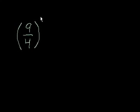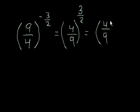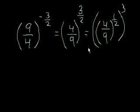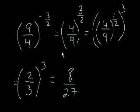Let's try 9 over 4 to the negative 3 over 2. We see that negative exponent, so we flip the base to get 4 over 9 to the 3 halves. We know that equals 4 over 9 to the 1 half, all raised to the third power. 4 over 9 to the 1 half is 4 to the 1 half — which is 2 — over 9 to the 1 half — which is 3. Then we raise everything to the third power: 2 to the third is 8, divided by 3 to the third is 27. So 9 fourths to the negative 3 halves power is equal to 8 over 27.